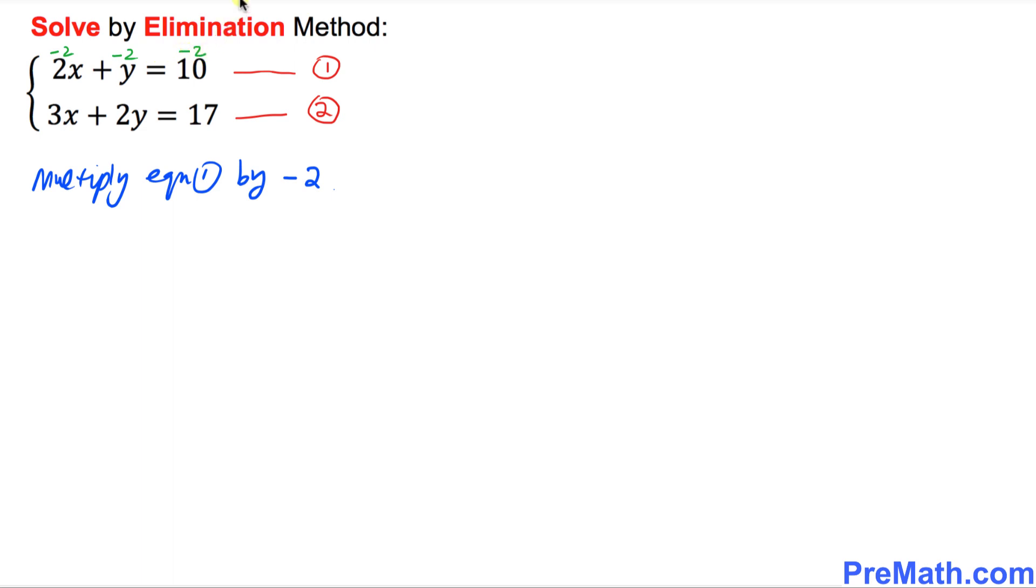So we are going to have negative 4x minus 2y equal to negative 20.